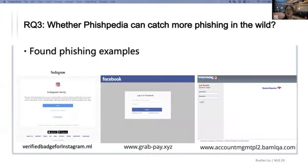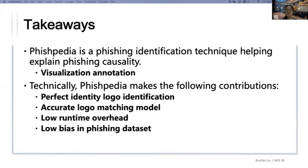Here we show some examples of found phishing. These three examples are from Instagram phishing, Facebook phishing, and Bank of America phishing. To conclude, Fishpedia is a phishing identification technique that helps extend phishing causality analysis. Technically, Fishpedia makes the following contributions: precise logo identification, accurate logo matching model, low runtime overhead, and low bias in phishing datasets.